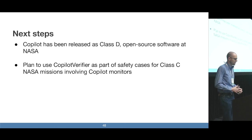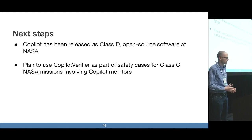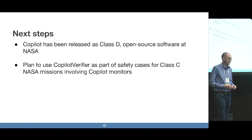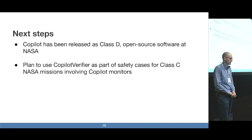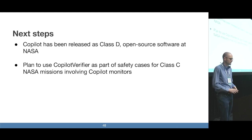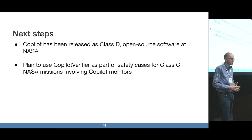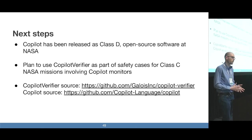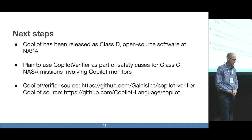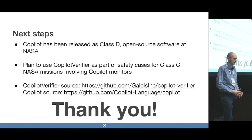Looking to the immediate future, we want to use Copilot Verifier as part of missions that require a higher degree of safety. NASA has a classification system — Copilot is currently at Class D, and we want to use Copilot monitors combined with Copilot Verifier on Class C missions, which are the level above. This is an ongoing process. In the meantime, the source code for both Copilot Verifier and Copilot are publicly available on GitHub if you want to try this out yourself.